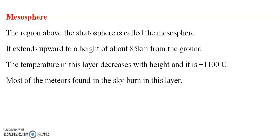The next one is the mesosphere. The region above the stratosphere is called the mesosphere and extends up to a height of 85 km from the ground. The temperature is around minus 90 degrees Celsius. Most of the meteors found in the sky burn up in this layer.